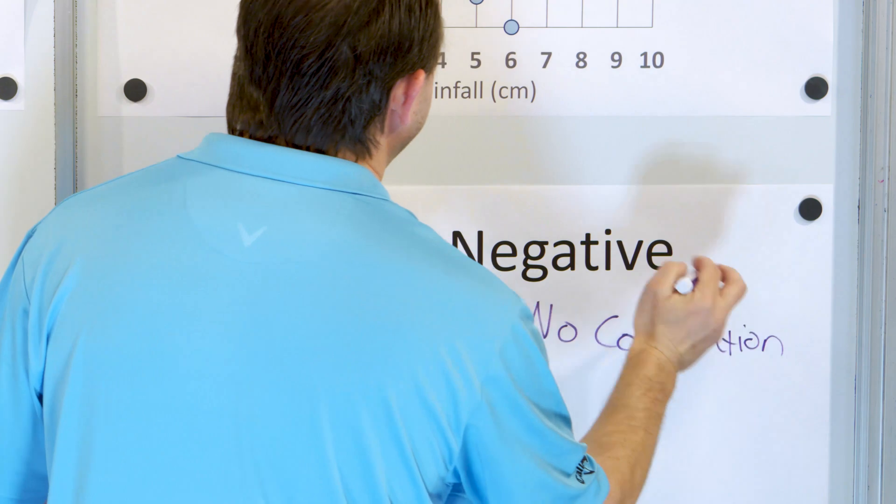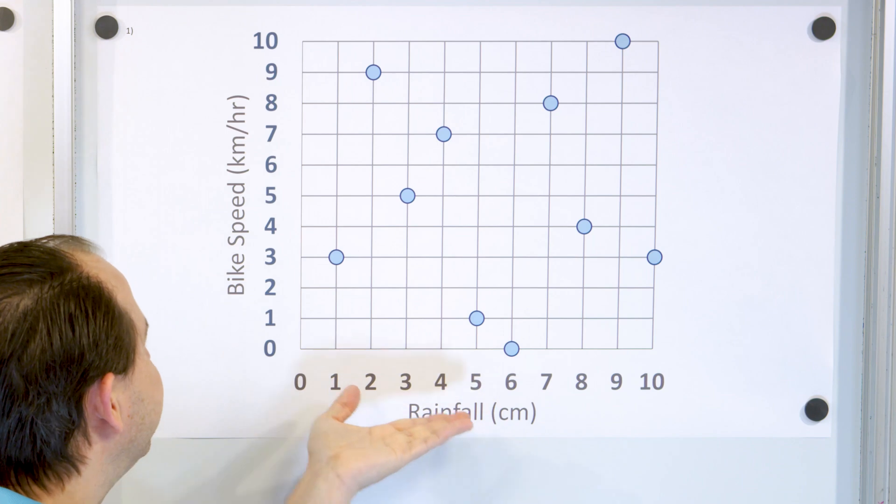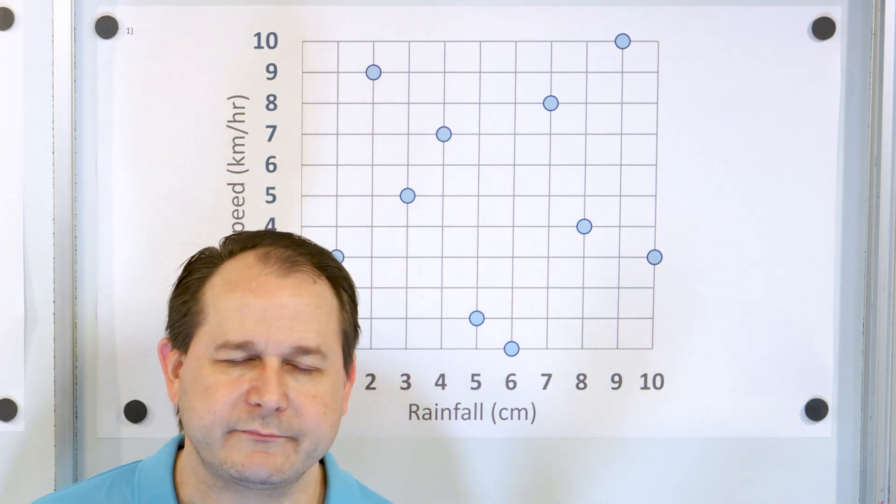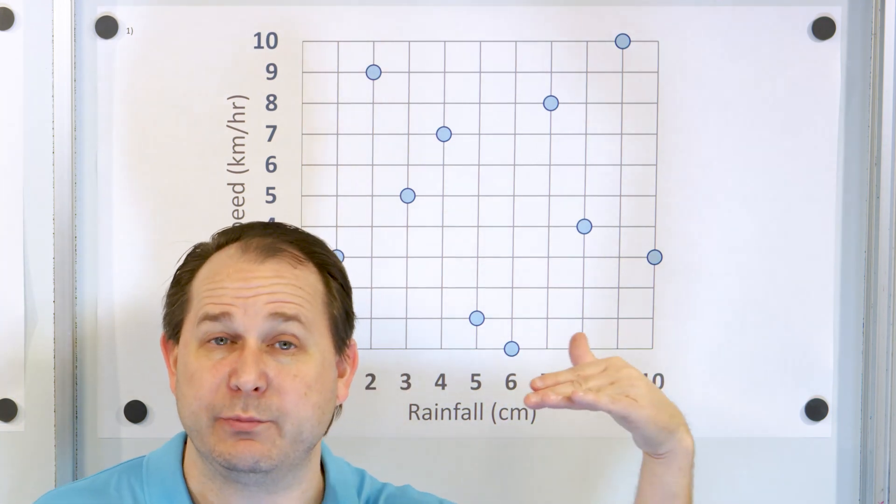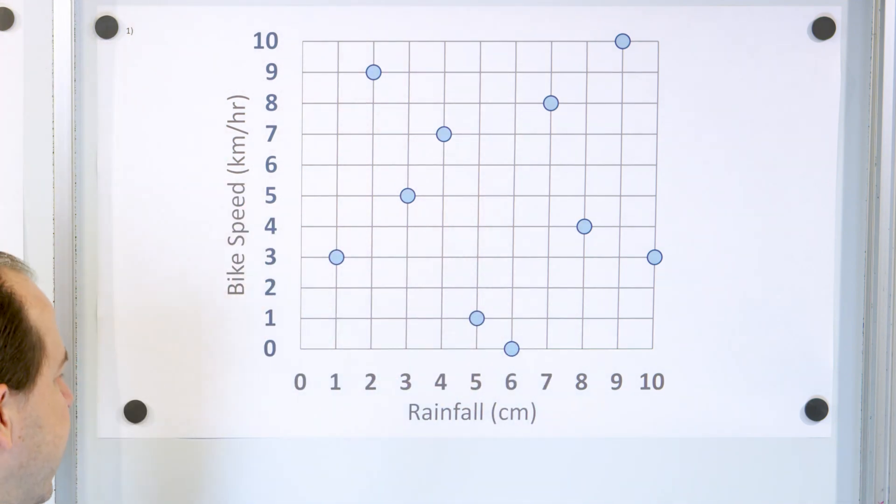And it makes sense, right? I shouldn't say I don't believe—it's possible that rainfall could influence bike speed. Maybe you have a lot of rain, maybe the bikes are traveling slower, but I think you would see some sort of clear trend line. Here we don't see anything. These things appear to be unconnected in this data set, so we say there's no correlation.